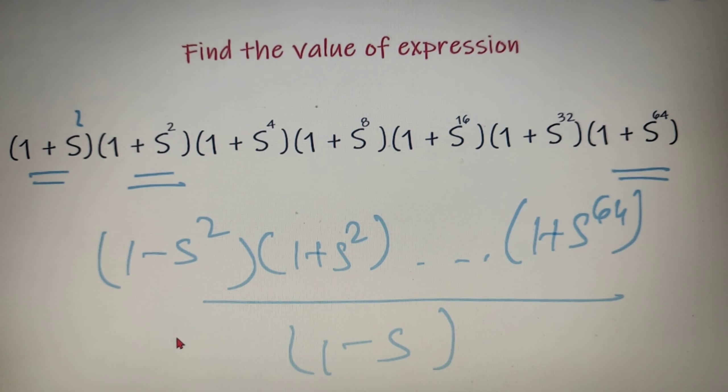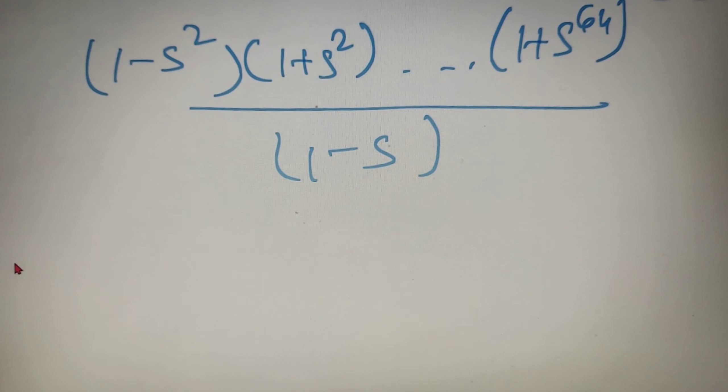Again I will use the formula (a - b)(a + b) = a² - b². I will get (1 - s⁴)(1 + s⁴) up to (1 + s⁶⁴) whole divided by (1 - s).